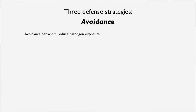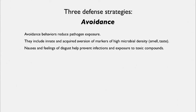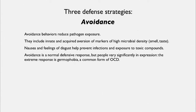Avoidance behavior would also reduce pathogen exposure. We have innate and acquired aversions to things that are markers of high microbial density — smell and taste. Nausea and feelings of disgust help to prevent infection and exposure to things like toxic compounds.